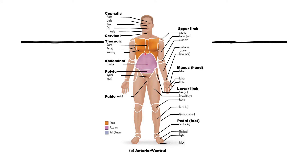In the thoracic region, we have the sternal region, which is the middle portion of the thorax, and the axillary region, which is the armpit area — you may hear of an axillary temperature being taken. The mammary region refers to the breast area; even when viewing a male diagram, we still call it the mammary region.